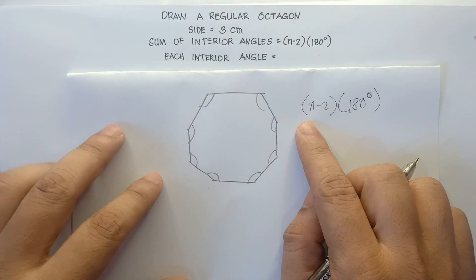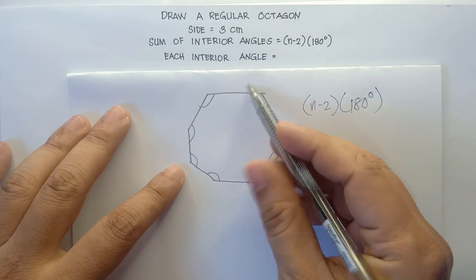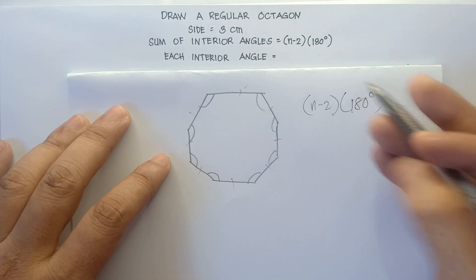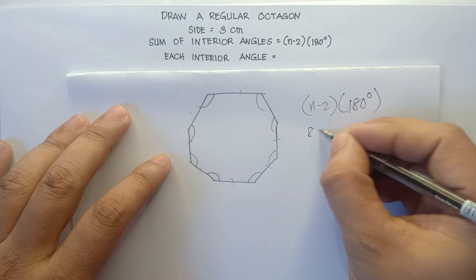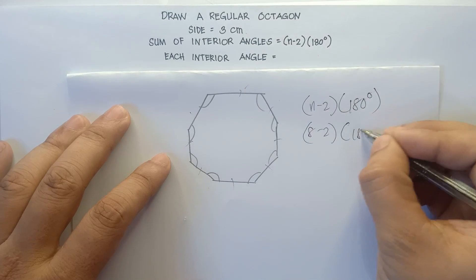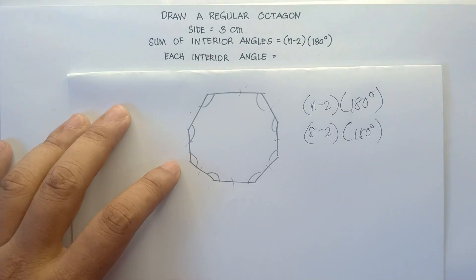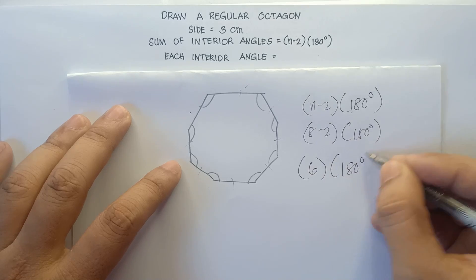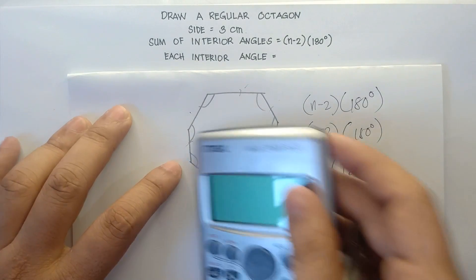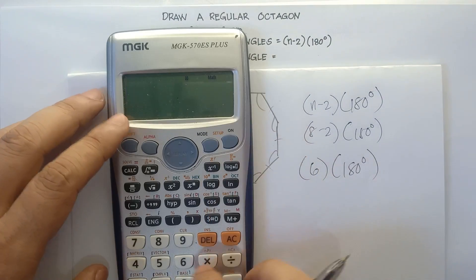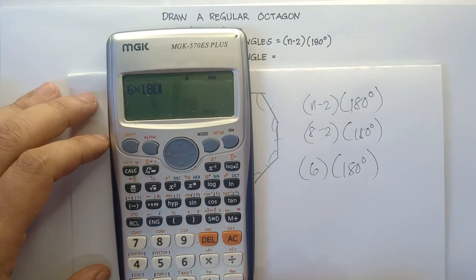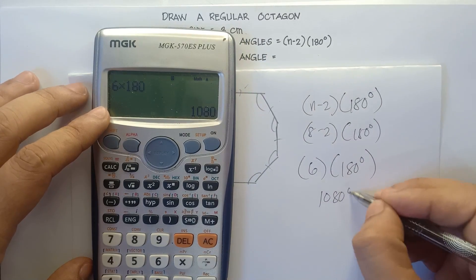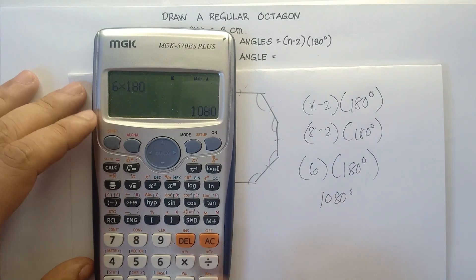Here, n represents the number of sides. We have 8 sides. So 8 minus 2 times 180 degrees: 8 minus 2 is 6, times 180 degrees. Using the calculator, 6 times 180 equals 1,080 degrees.